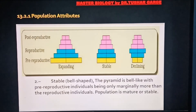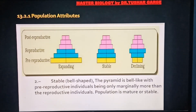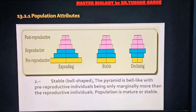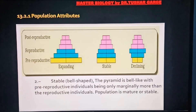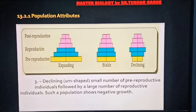दूसरा है bell-shape या stable population को signify करने वाला pyramid। यहाँ ध्यान देने वाली बात यह है कि pre-reproductive और reproductive population लगभग एक जैसी है, जिसकी वजह से यह population stable है। इसमें जितने नए organisms आ रहे हैं उतना उस population size को stable करने के लिए required होगा।